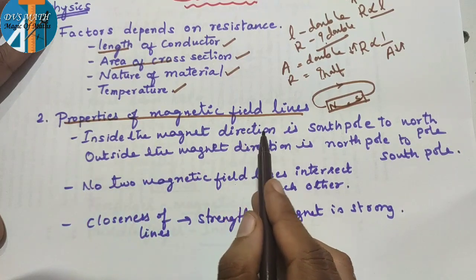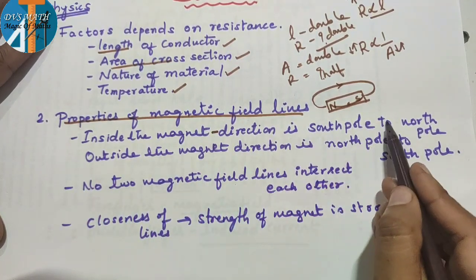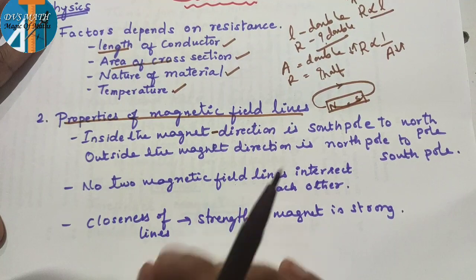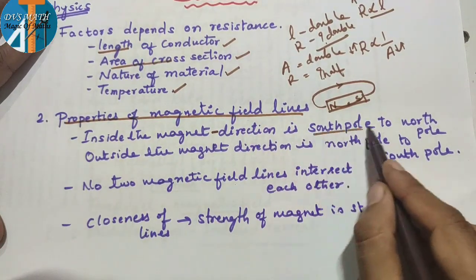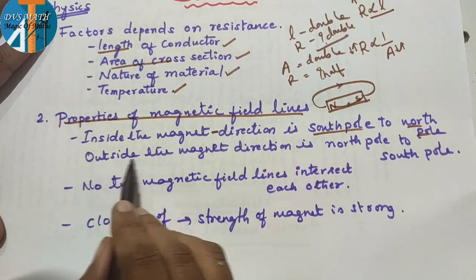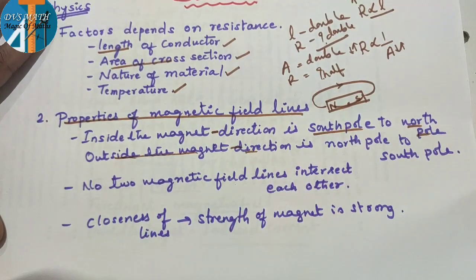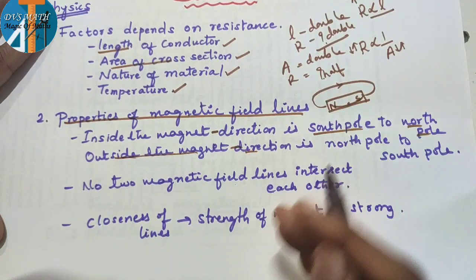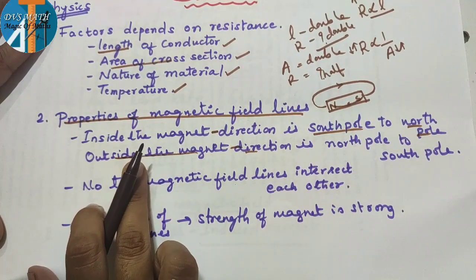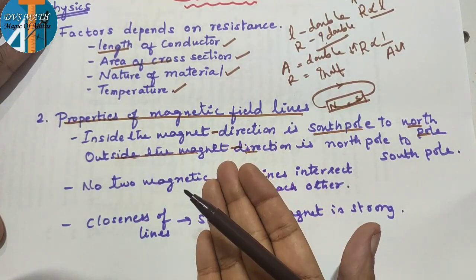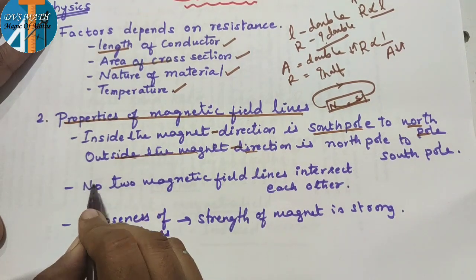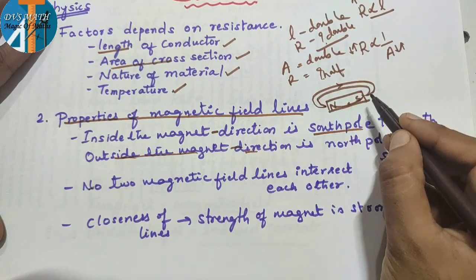Inside the magnet, direction is south to north pole. Outside the magnet, direction is north pole to south pole. So: outside — north to south; inside — south to north. This is the first property of magnetic field lines.